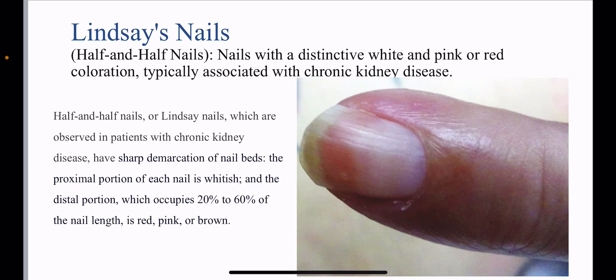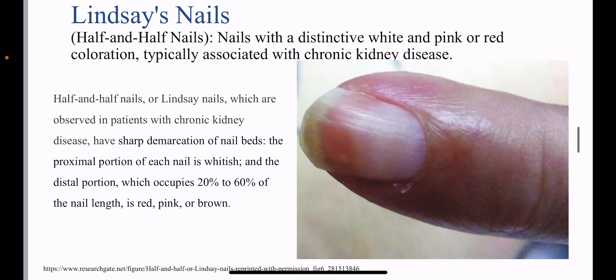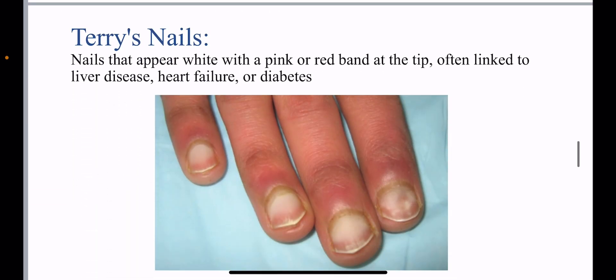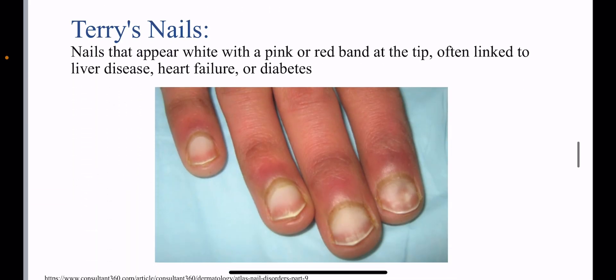Lindsay's nail is the half-and-half nail — nails with a distinctive white and pink or red coloration typically associated with chronic kidney disease. Lindsay's nails are observed in patients with CKD and have a sharp demarcation: the proximal portion is whitish, and the distal portion, which occupies 20 to 60 percent of the nail length, is red, pink, or brown in color.